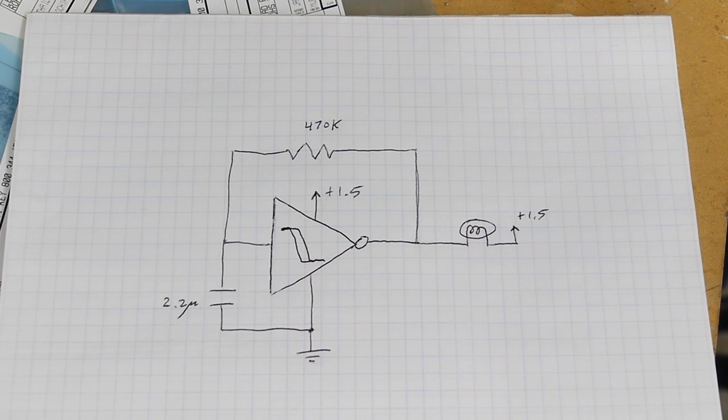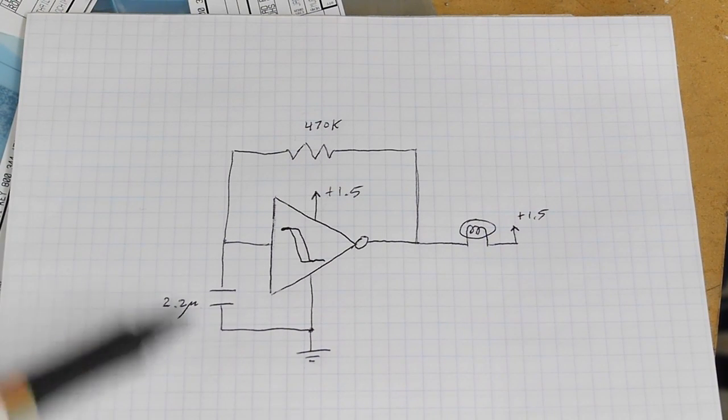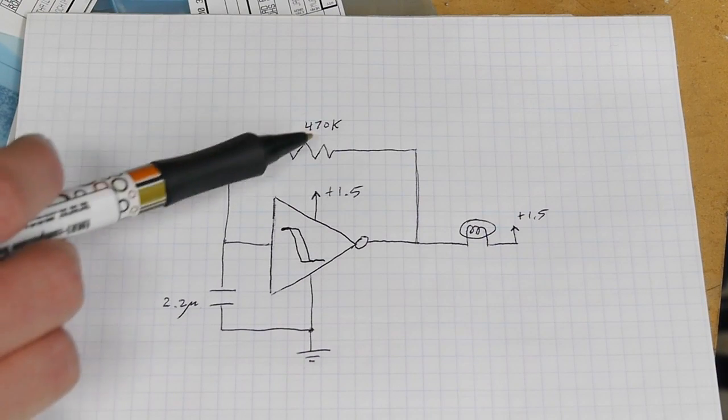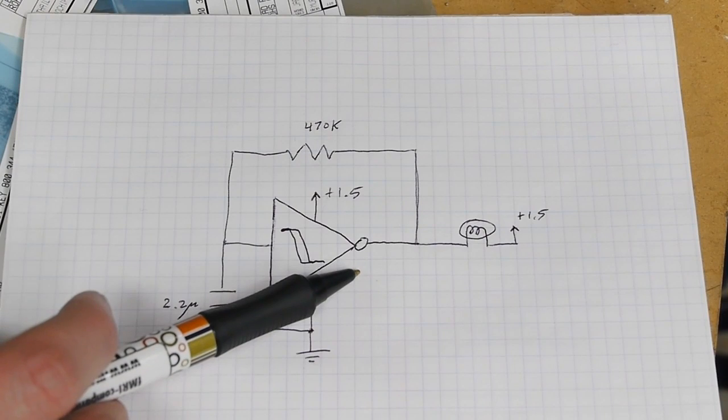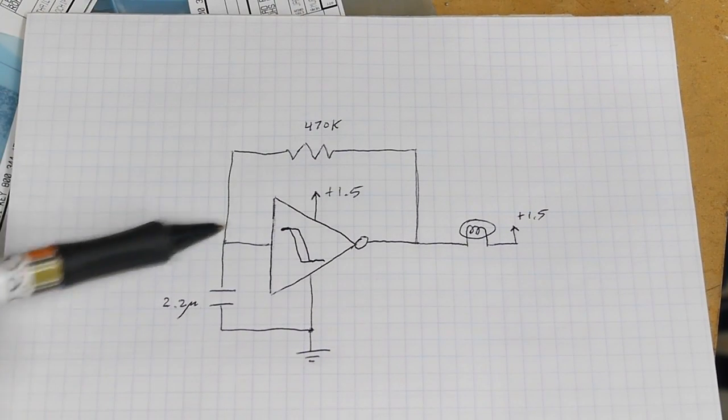You can see what will happen when the cycle continues. So let's say we're charging up this cap and we get up to the transition point here, then the output suddenly goes low and so now it's discharging this cap through the resistor and the cycle continues.